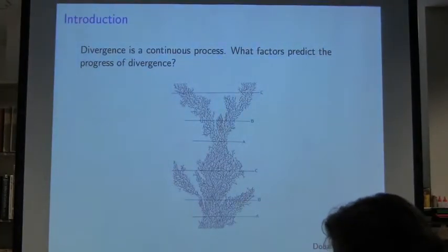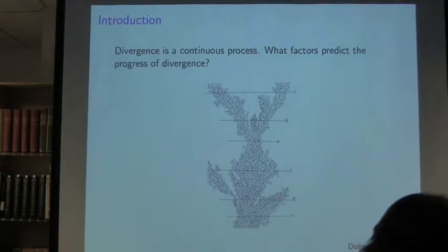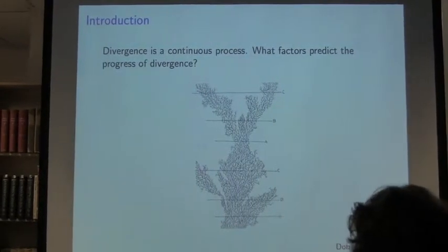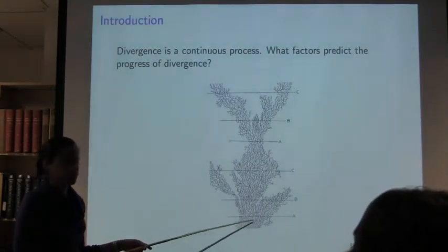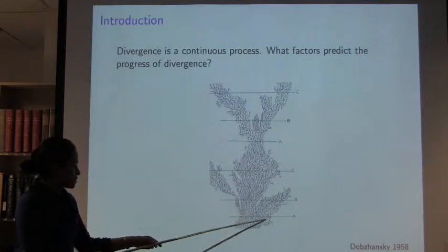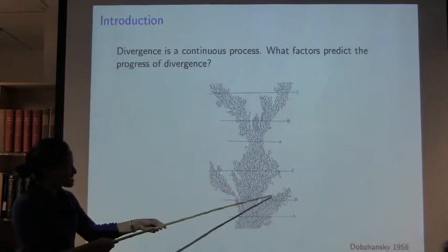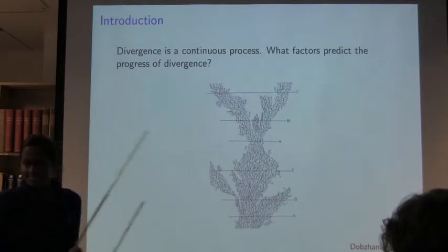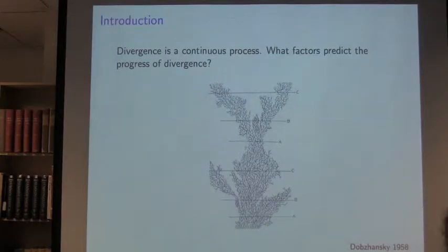I'm going to start with this figure that Dave Wake showed me a couple of months ago from a centennial celebration of the publishing of The Origin of Species. It's a figure drawn by Dobzhansky in which he shows the process of lineage formation as a continuous process. You start at point A with a population, and over time things start to diverge. At point B they're kind of different but not quite there. At point C these things are now distinct, and then it starts again. This iterative process motivates my research question: what are the factors that predict this progress of divergence?